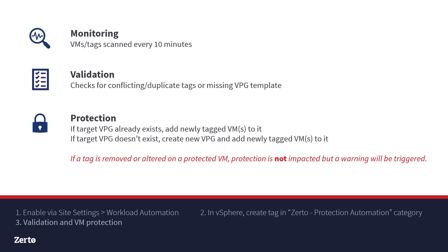Once successful, an automatically protected VM sits in a typical VPG and behaves just as it would if the VPG was created individually via the GUI workflow or via API. To prevent accidental deletions and inadvertent gaps in protection, a previously tagged VM that has its tag removed will not automatically be removed from its VPG.